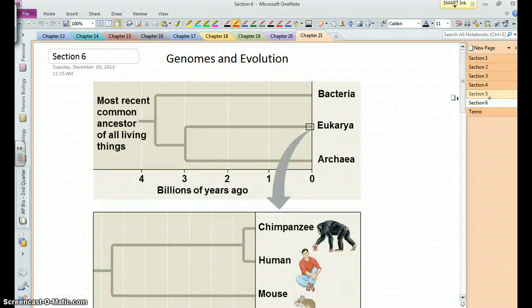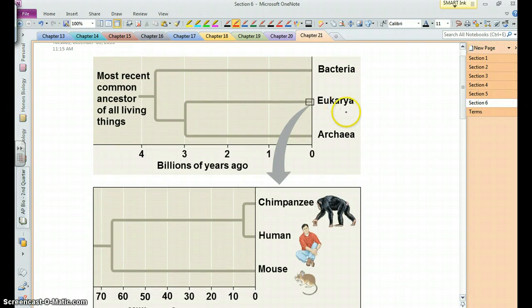Alright, last section of this chapter. And so, the fact that genomes evolve allows us to make use of them to figure out the relationships between different types of organisms, both on a large scale and a smaller scale. So when you look at the overall genome of eukaryotes, they're more similar to the archaea, this one group of prokaryotes, than they are to bacteria.